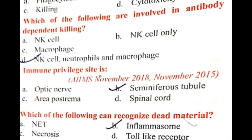An immune privileged site is a site where antigens are hidden from the immune system. For example, the seminiferous tubules contain semen and sperms that are hidden from other body tissues by the blood-testis barrier. This barrier prevents T cells, B cells, phagocytic cells, and cytotoxic cells from entering the seminiferous tubules.